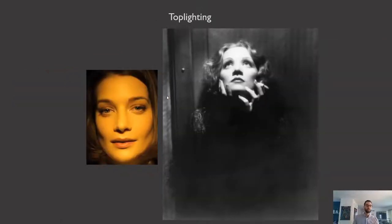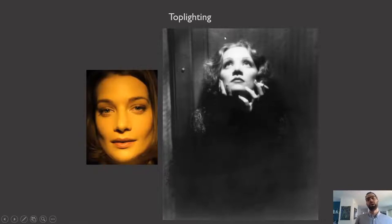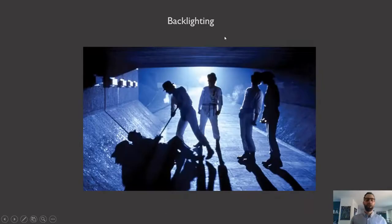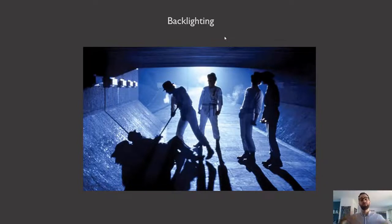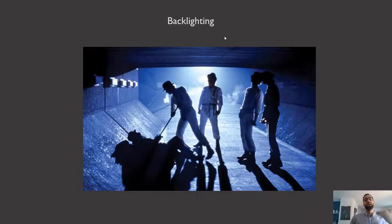Top lighting is often associated with glamour, and you can see that partly because the cheekbones are emphasized in this very famous image of Marlene Dietrich. Backlighting has to do with the fact that light is coming from the back and generally will produce a silhouette effect. A silhouette is an image whose shape is apparent but whose formal features are dark and can't be distinguished — that has to do with the light coming from behind.